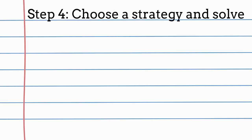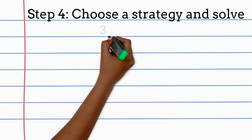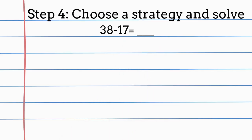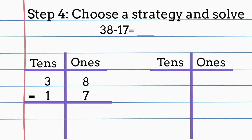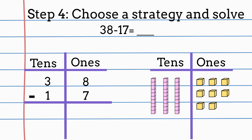Now I'm going to find a strategy and solve. My equation for this problem is 38 minus 17. These are bigger numbers, so I'm going to use place value to help me solve this problem. I'm going to model the number 38 because that's how many seashells John found. I know I'll be taking away 17. First, I'll subtract my ones place. Now I'll subtract my tens place. Now I can see that John has 21 seashells after he gives 17 away to his sister, but I'm not finished yet.